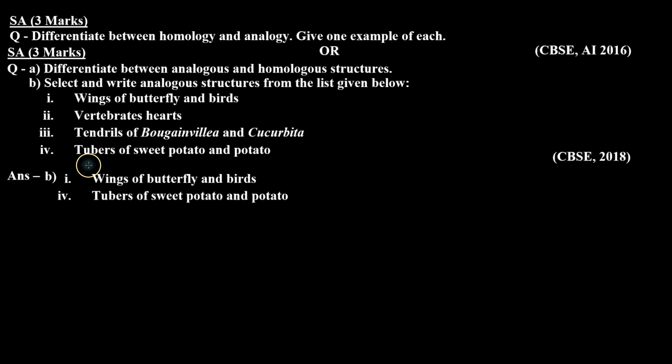Then in part B we have to choose analogous structures. First, wings of butterfly and birds, and fourth, tubers of sweet potato and potato.